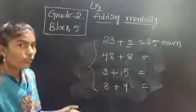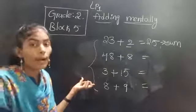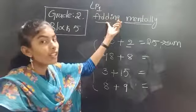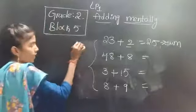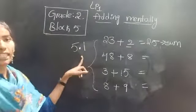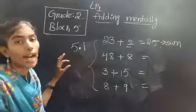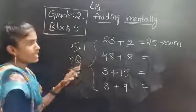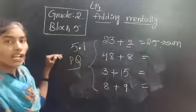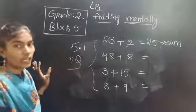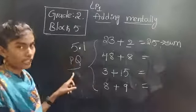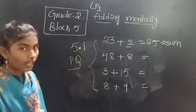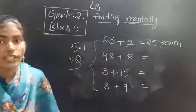Now after doing your classwork, you have to complete your worksheet also, children. This is Block 5, Lesson 1, so your worksheet is 5.1. You have to complete the 5.1 worksheet and also the practice questions in Lesson 1 from Block 5 — exactly as discussed in class. I need three works from you: practice questions, worksheet, and classwork. Hope you all understood. Thank you.